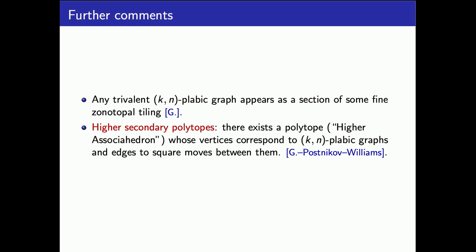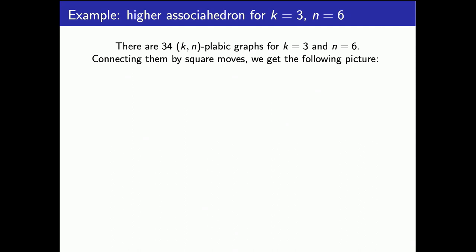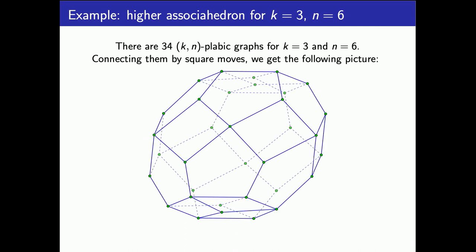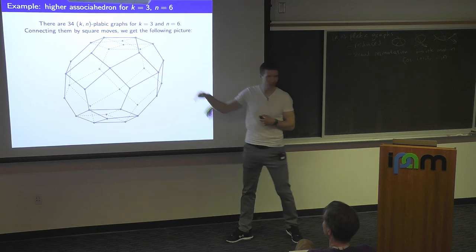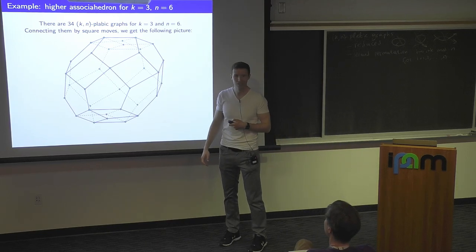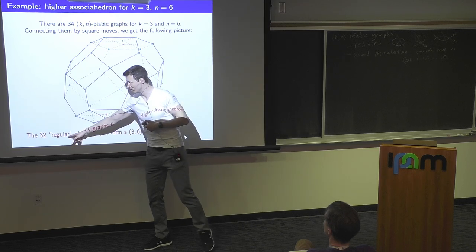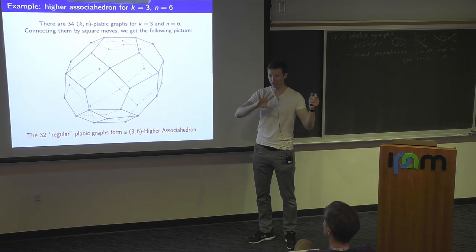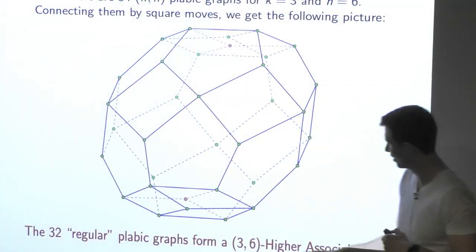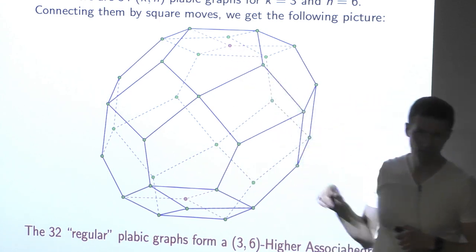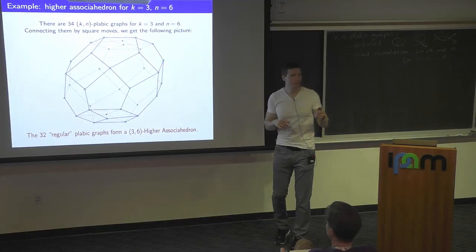If you take K equals 3 and N equals 6, you compute that there are 34 K-N plebik graphs. If you look at which ones are connected by moves, you see a picture like a polytope. I was in my first year of grad school and an older student showed me this picture and I was intrigued for five years — why does it look like a polytope? It's not quite a polytope; there are extra two vertices which spoil this. What you can see from zonotopal tilings is that there's a notion of a regular plebik graph, analogous to a regular/coherent triangulation. If you remove these two non-regular vertices, you get an honest polytope.